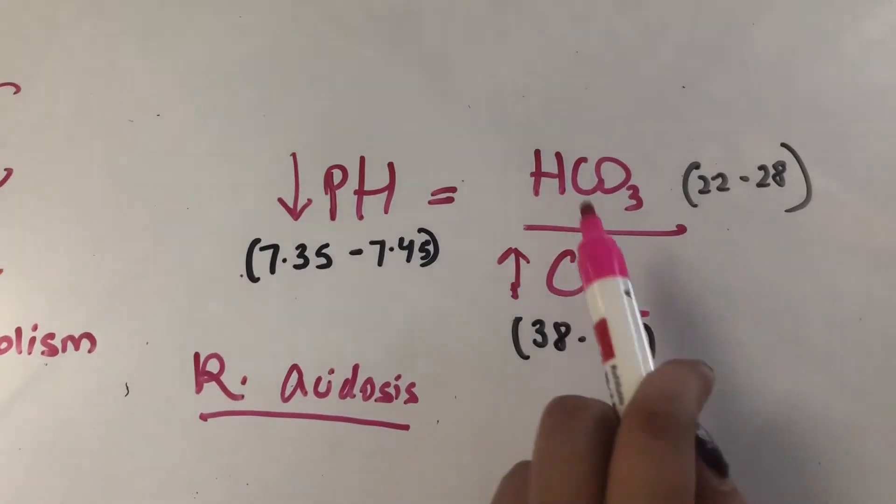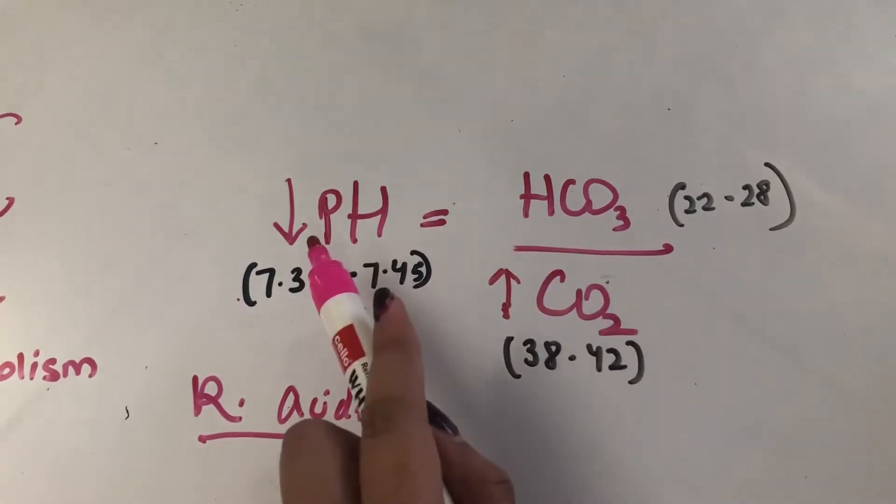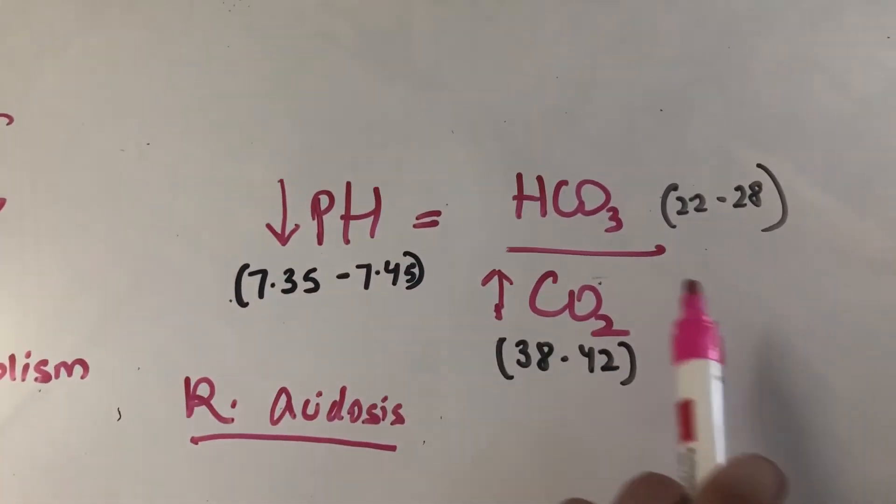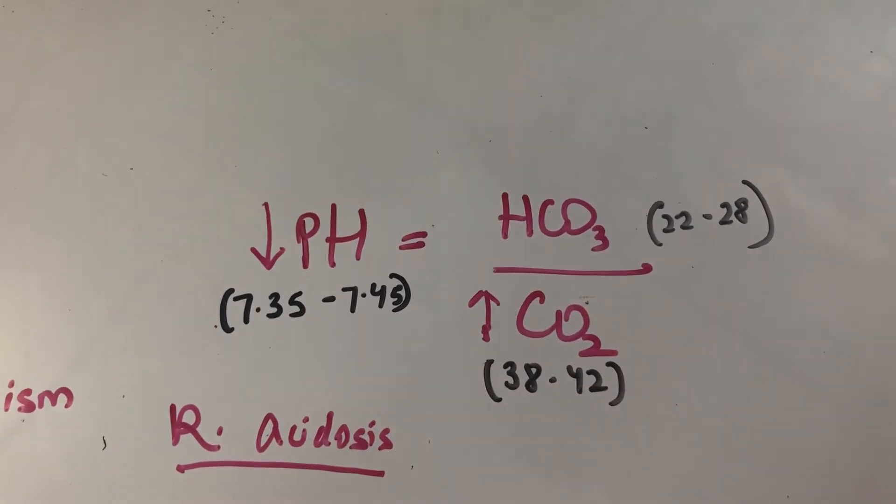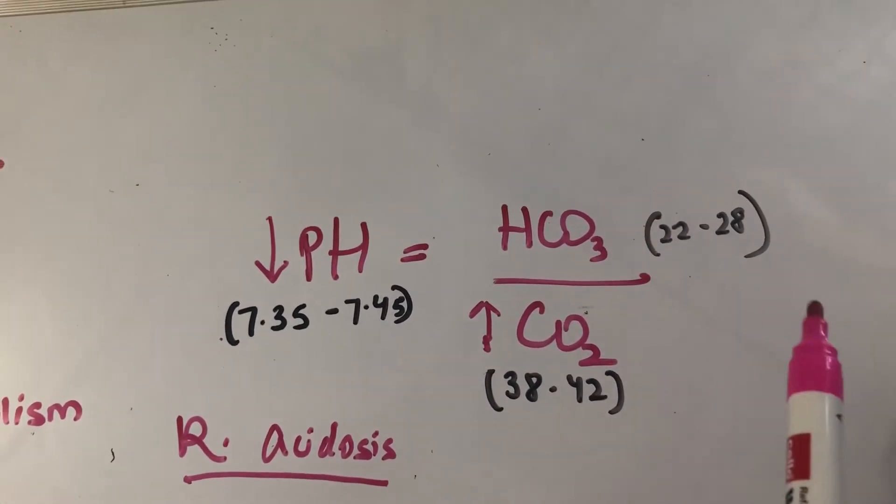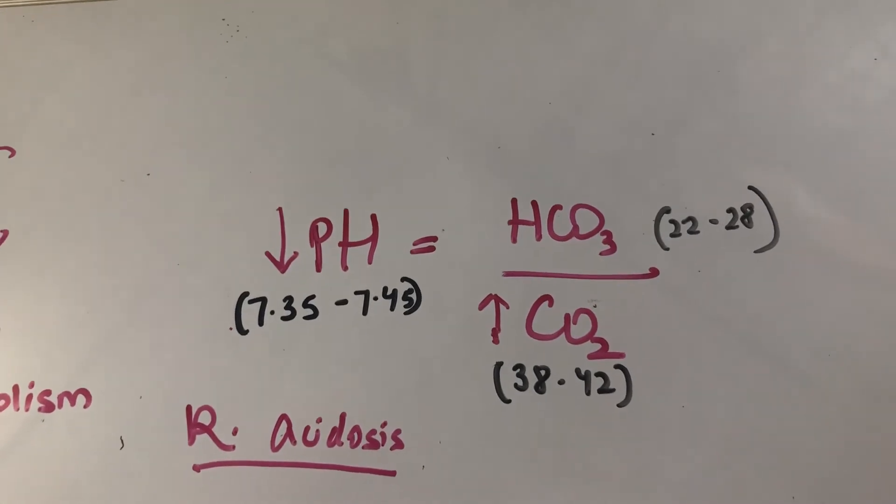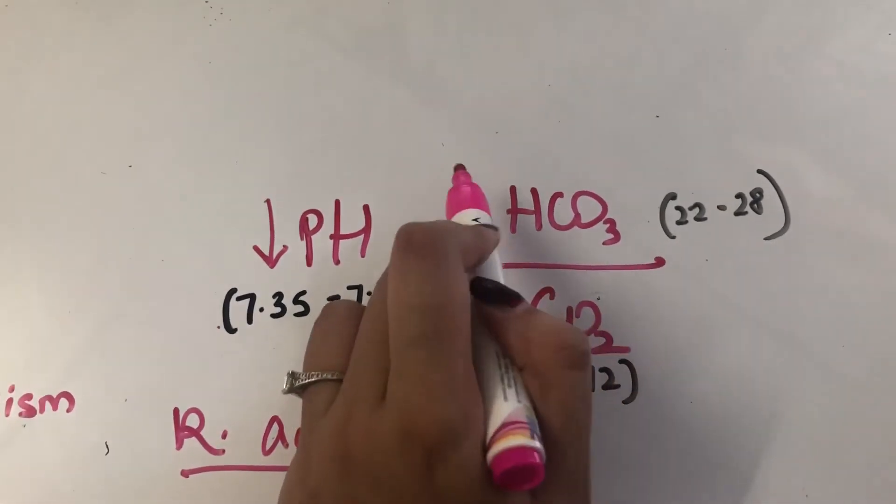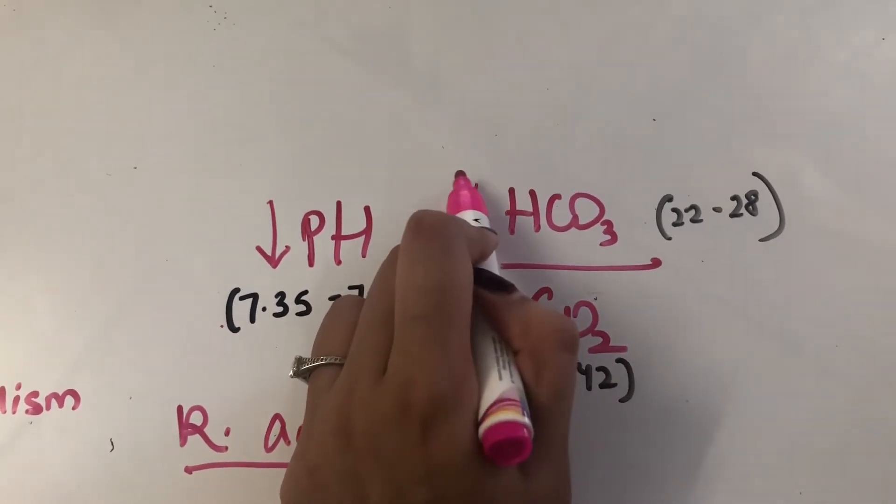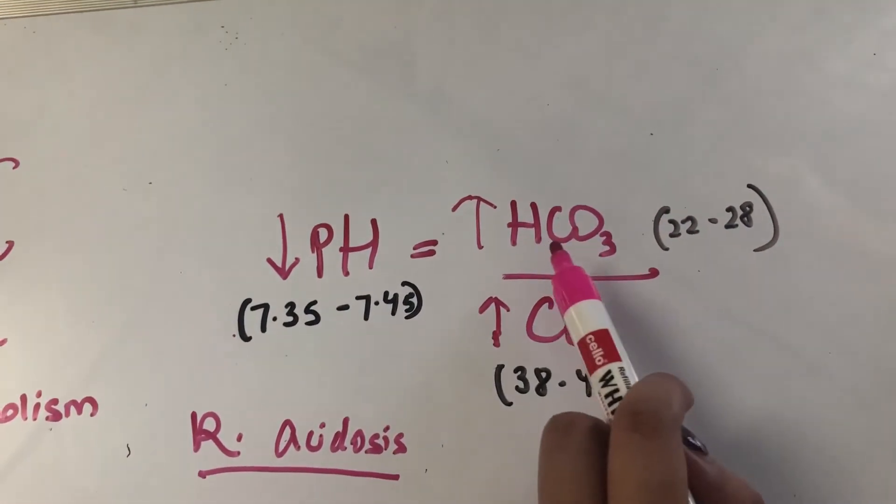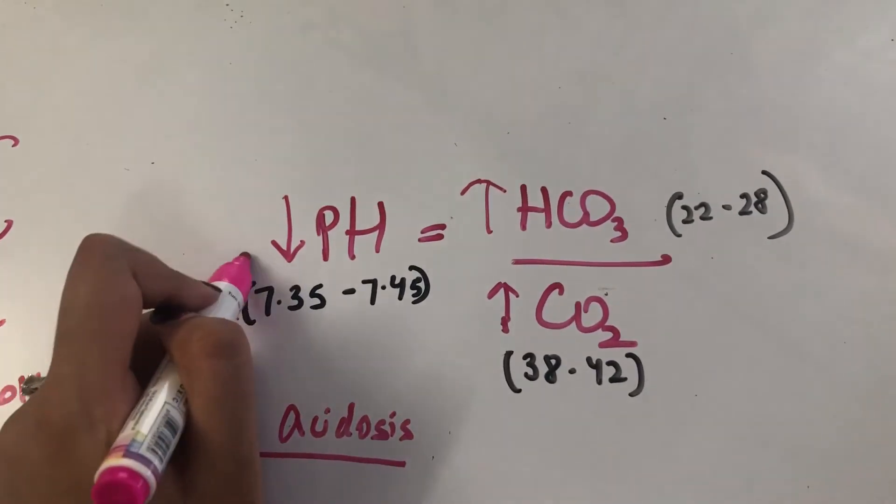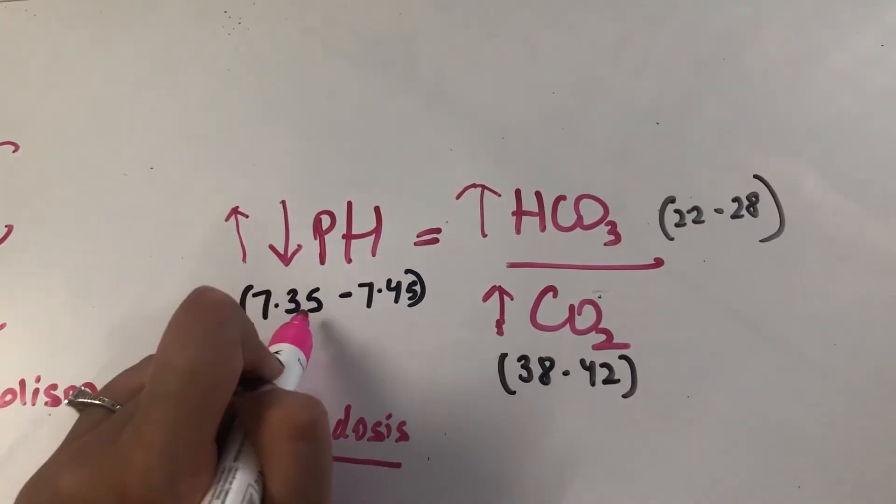Now, when the HCO3 in the kidneys see that pH being low, they want to bring the pH back up, right? So what they will do is they will start reabsorbing bicarbonate, and also they will start excreting out hydrogen ions in the urine. So when that happens, the HCO3 levels start to rise. They start to become 32, 33, something like that. And when they go up, the pH starts to come back up and starts to come back in the normal range.